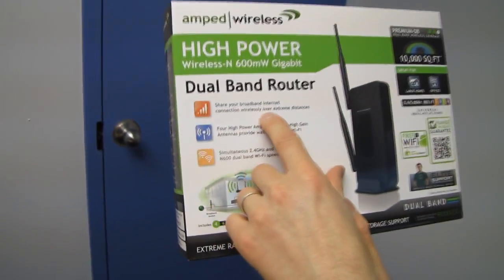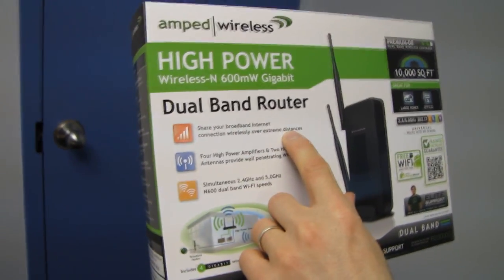So what is Amped Wireless? Well, it's a dual band router which allows you to share your broadband internet connectivity wirelessly over extreme distances. Very cool.